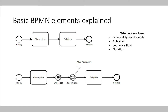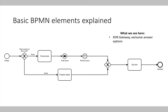The only limitation is that our processes are currently quite linear: we start with an event, have different activities, and end with an event. Usually we need the possibility to model different process paths. Another element of the BPMN modeling language are gateways. A gateway is represented by a diamond shape, with a small icon representing what the gateway is about.